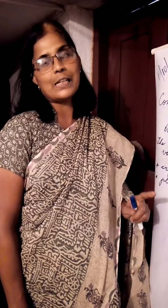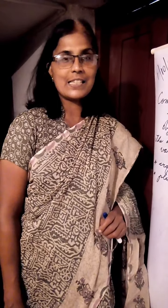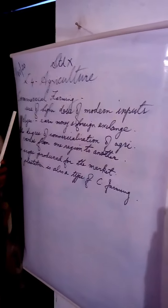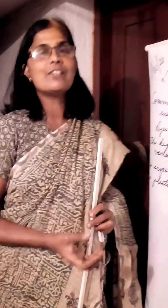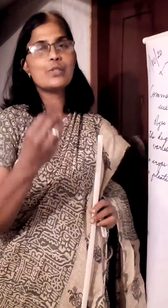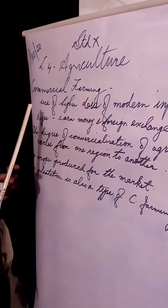Today we will proceed with the third type of farming, that is commercial farming. From the word itself, you know that commercial farming means the cultivation is done with the intention of selling in the market. This is one of the characteristics of commercial farming.